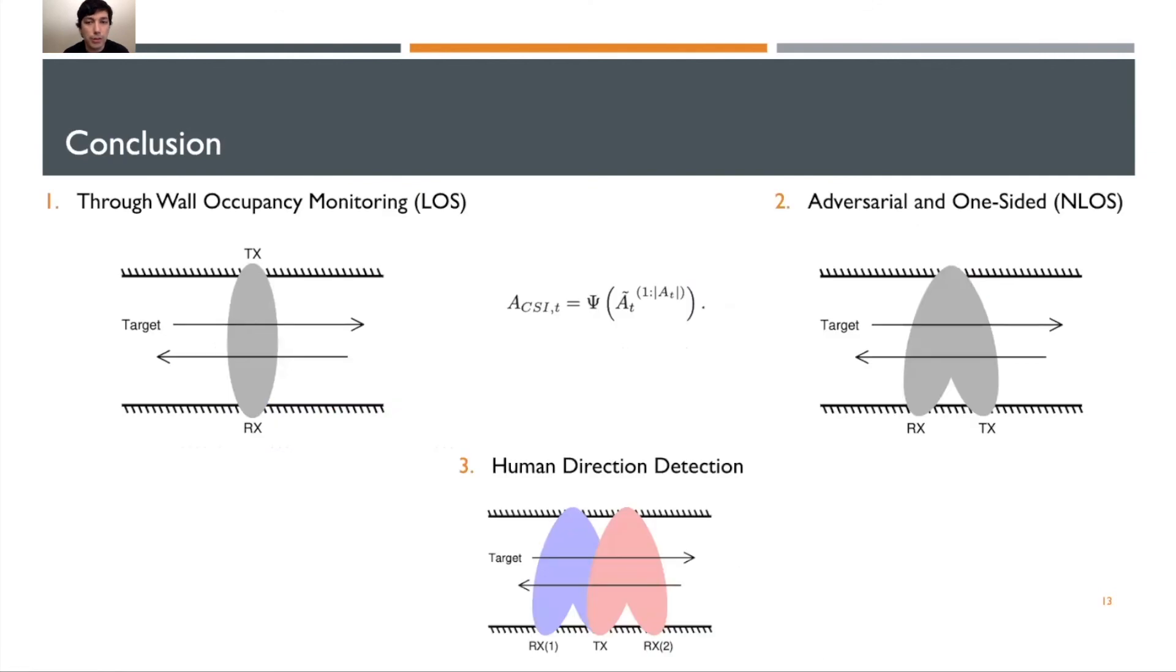As a conclusion, in this work, we demonstrated how through-wall occupancy monitoring can be performed in Wi-Fi sensing in a line of sight scenario. We also showed how we can use ACSI to perform adversarial, one-sided, non-line of sight sensing as well. Finally, we showed how we can use these binary predictions to further understand human direction.